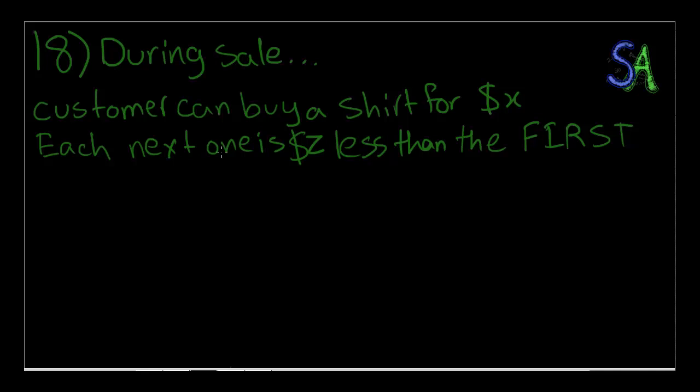Being number 18 and very close to the end, this has a pretty big trick in it, and you might notice it by now if you've been following along for this long. The first shirt will cost X dollars. Each next one will be Z dollars less than the first. Not just the second one, but every single one after the first one will be Z dollars less than X.